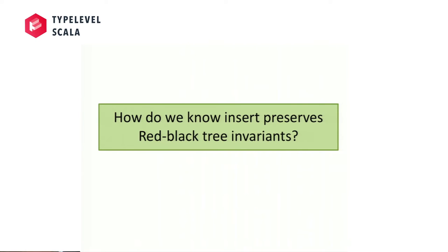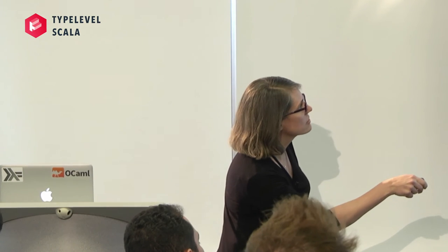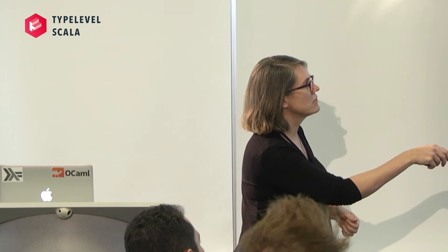How do we know this actually satisfies the red-black tree invariants? I argued informally — do you believe me? We could ask the Haskell type checker to verify it for us. We're going to create a new type that verifies when a produced tree satisfies those invariants. I'll define a type called RBT for red-black tree, and that type will only hold trees satisfying the red-black tree invariant. If the insertion function type checks with this type, you know the result will be a red-black tree.